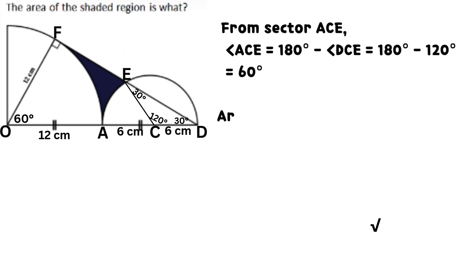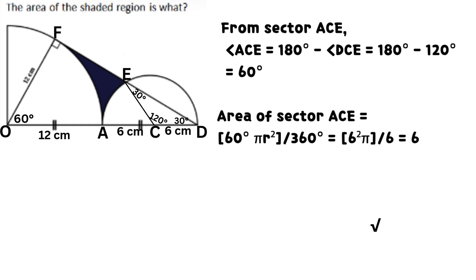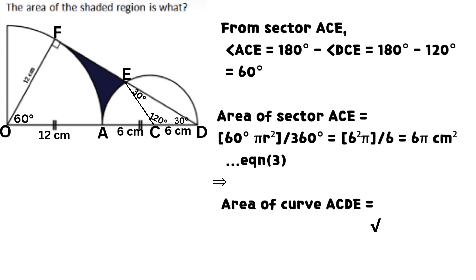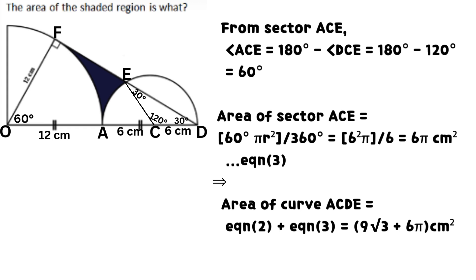Angle ACE equals 180 degrees minus angle DCE, which equals 60 degrees. Area of sector ACE equals 60 degrees times pi times r squared, all divided by 360 degrees, which equals 6 pi square centimeters. Area of curve ACDE equals the sum of equation 2 and equation 3, which equals 9 times the square root of 3 plus 6 pi square centimeters.